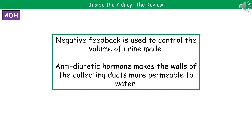To control the amount of urine we're actually making, we use a negative feedback system. This relies on a hormone called antidiuretic hormone, or ADH. What ADH does is make the walls of the collecting ducts more permeable to water.